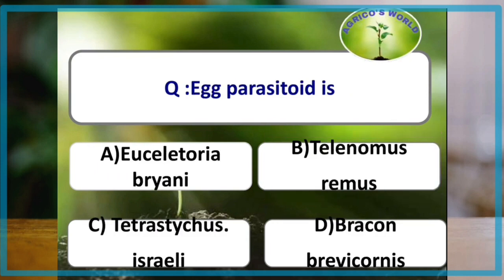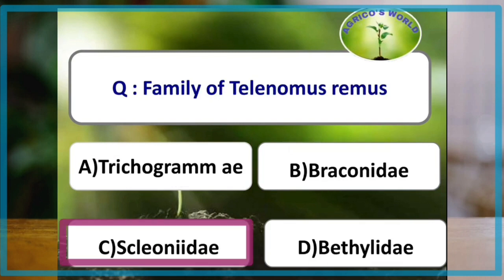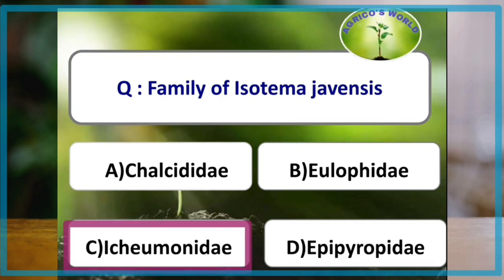Which one of the following is an egg parasitoid? The answer is Telenomus remus. True egg parasitoids are individuals that deposit their eggs in, and whose progeny emerge from, the host eggs themselves. The family of Telenomus remus is Scelionidae; the family of Isoptema javanicus is Eulophidae.